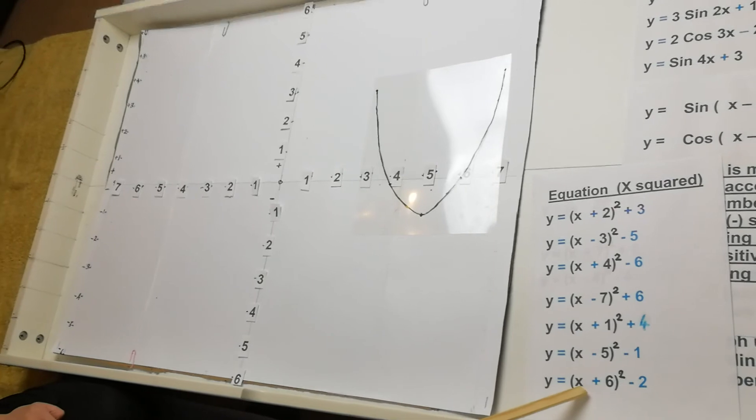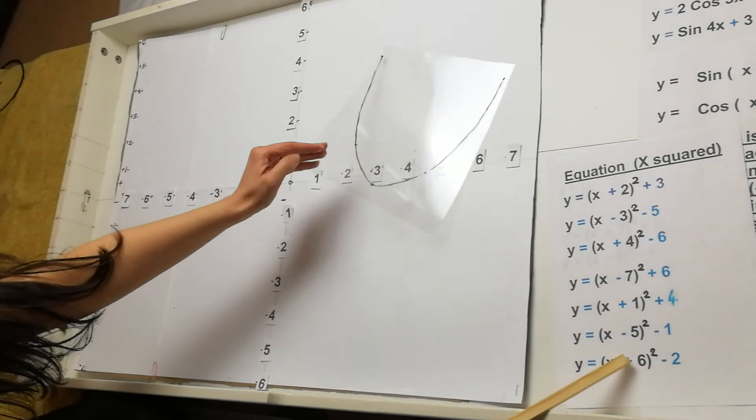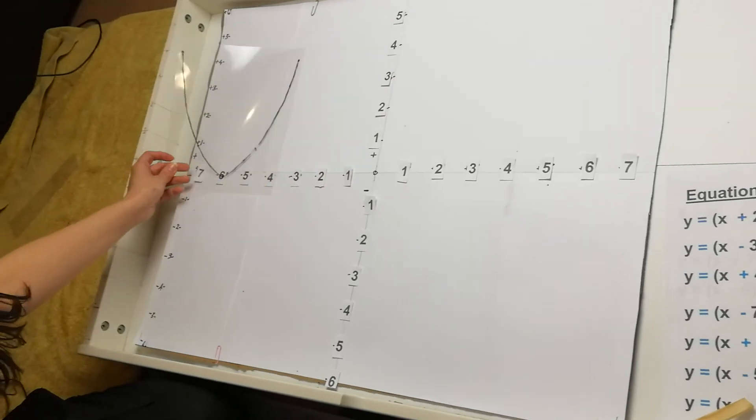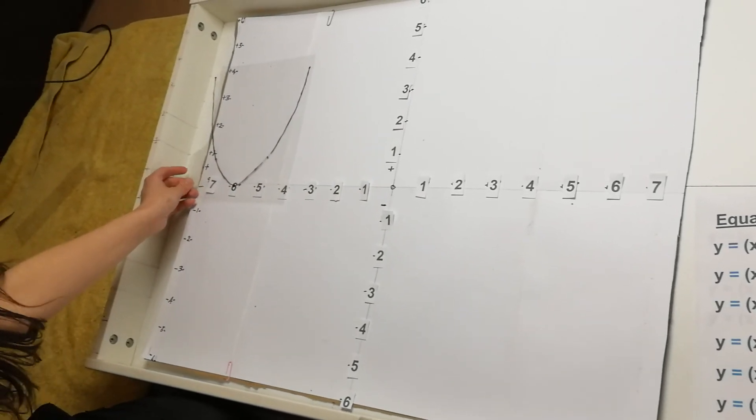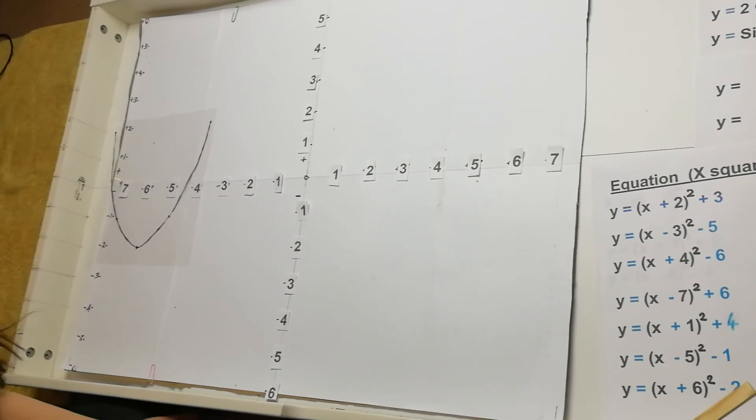So I'm going to come down to this one here. So plus 6 means moving to the left by 6. And the negative 2 means moving down by 2.